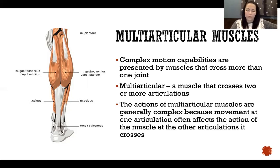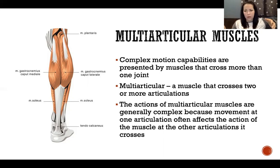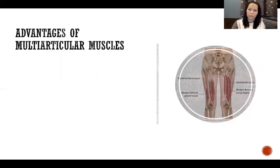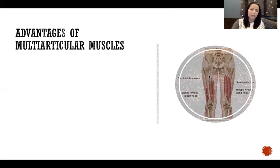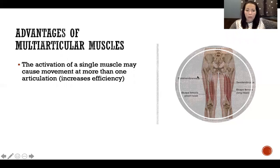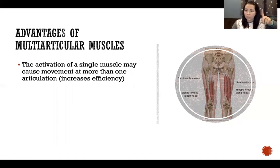The actions of multi-articular muscles are usually very complex because movement at one joint the muscle crosses affects what is possible at the other joints it crosses. There are some advantages and disadvantages to this. One advantage is that activation of a single muscle can cause movement at more than one articulation — it's more efficient than activating multiple separate muscles to move multiple joints.